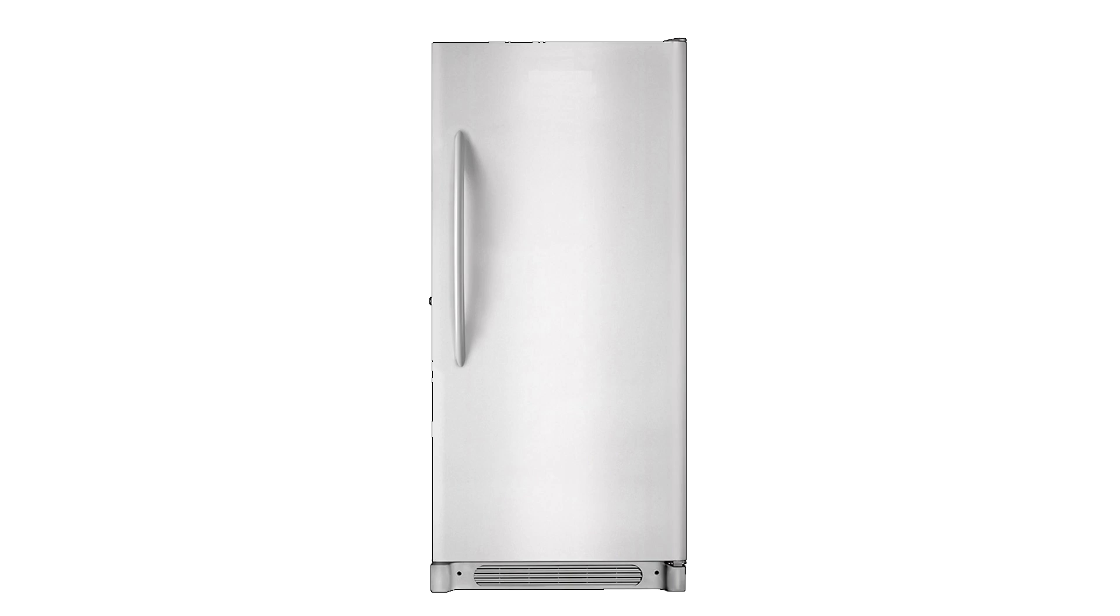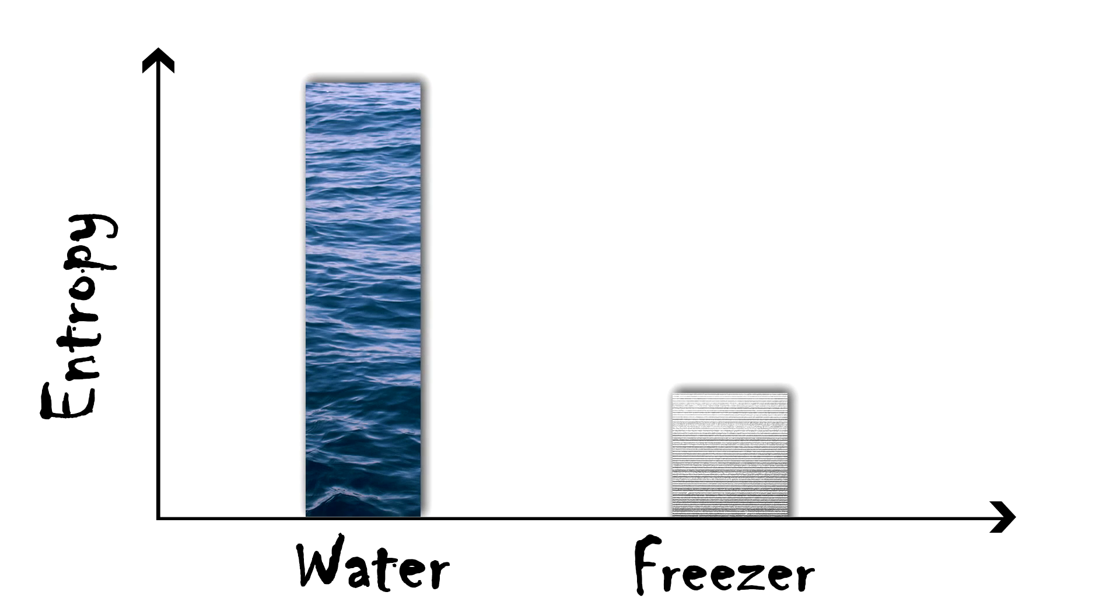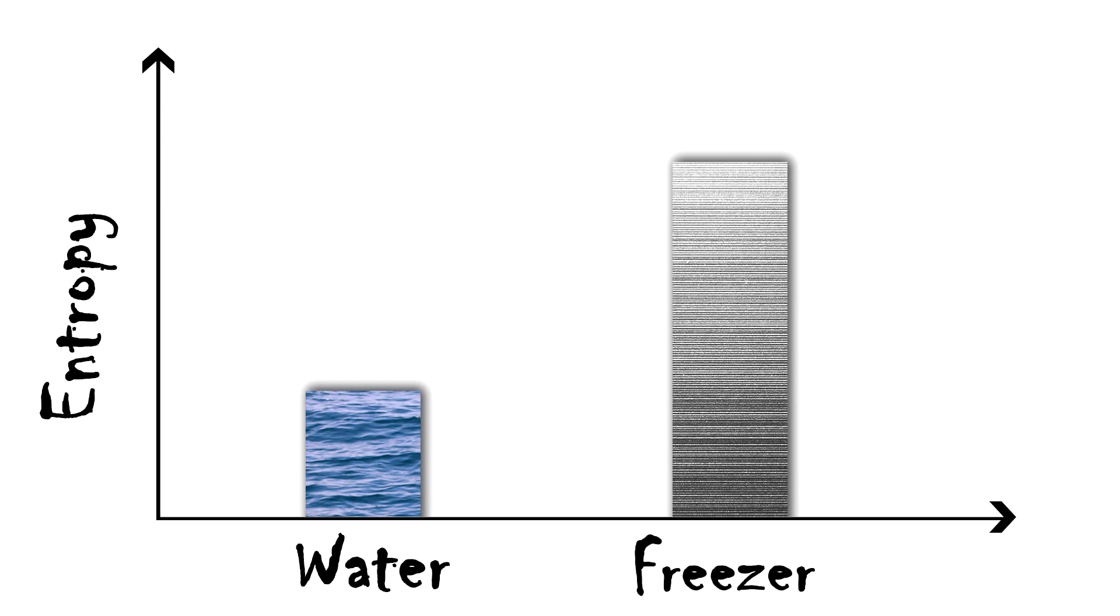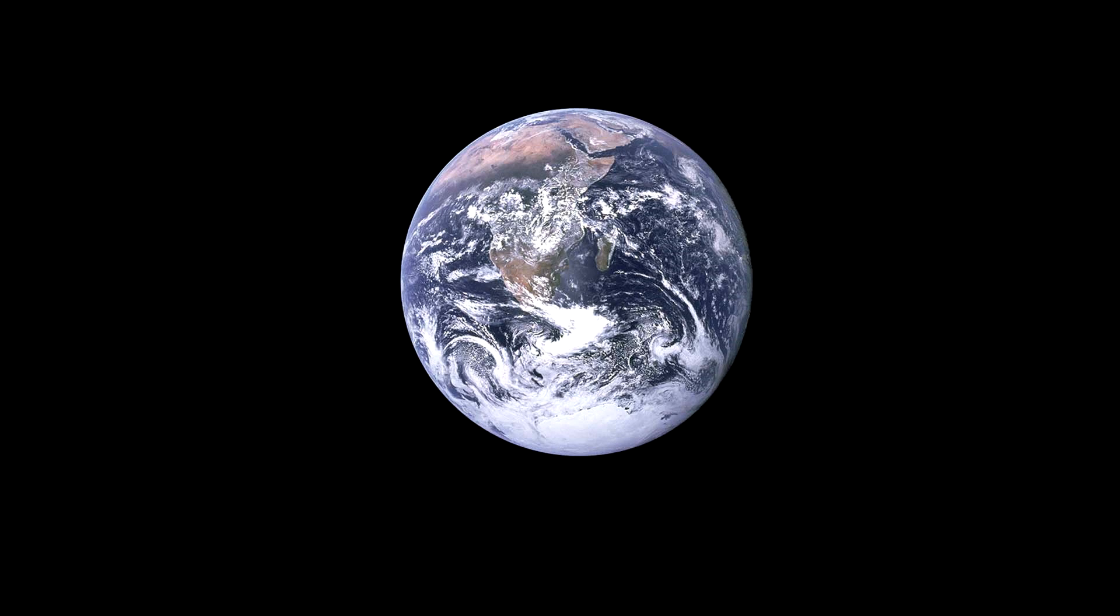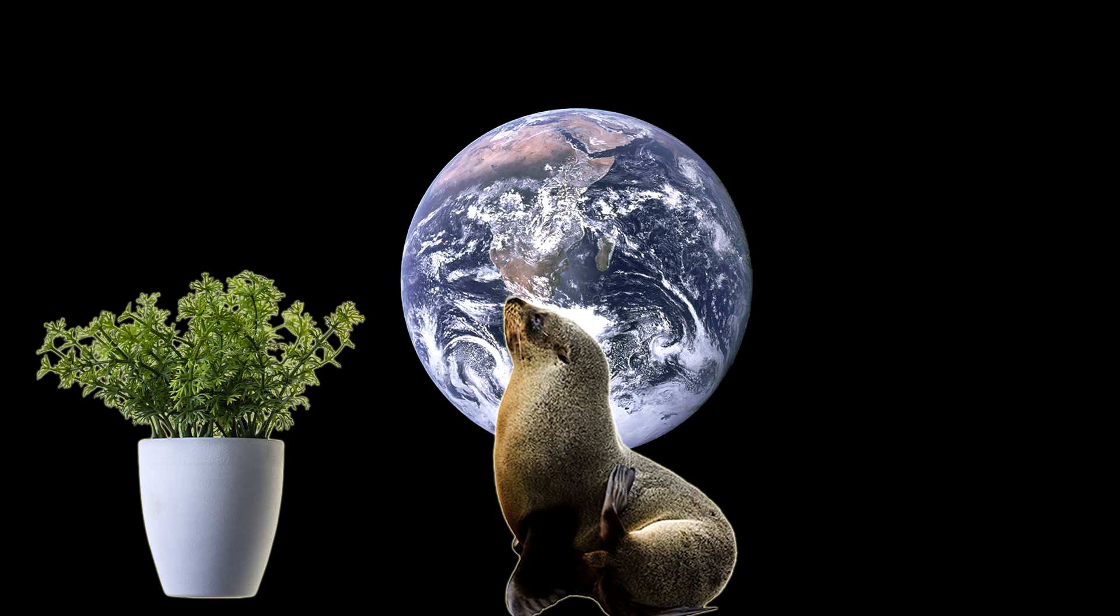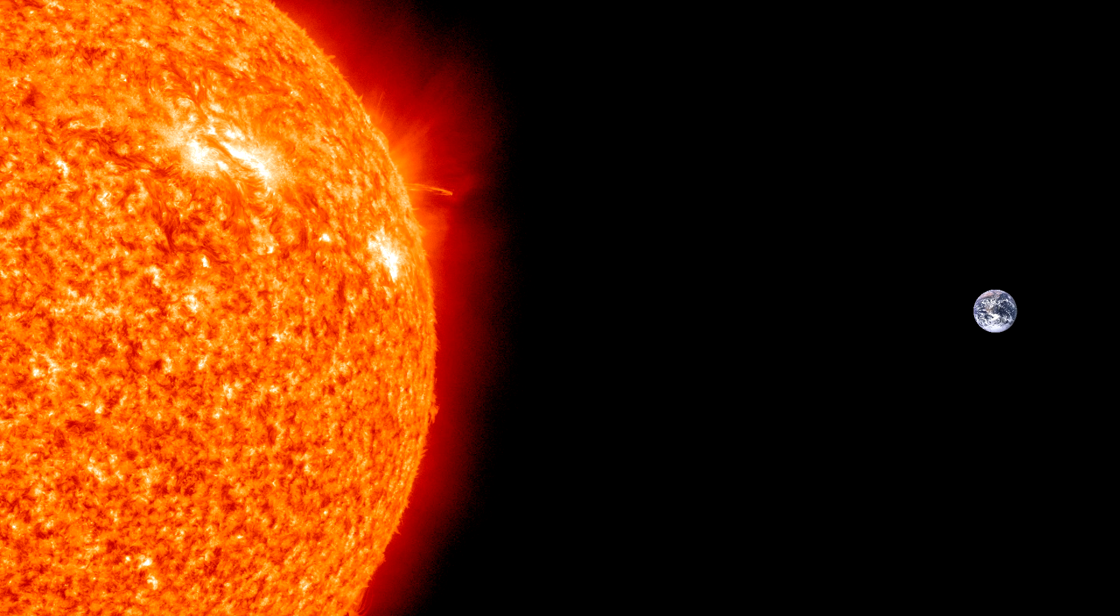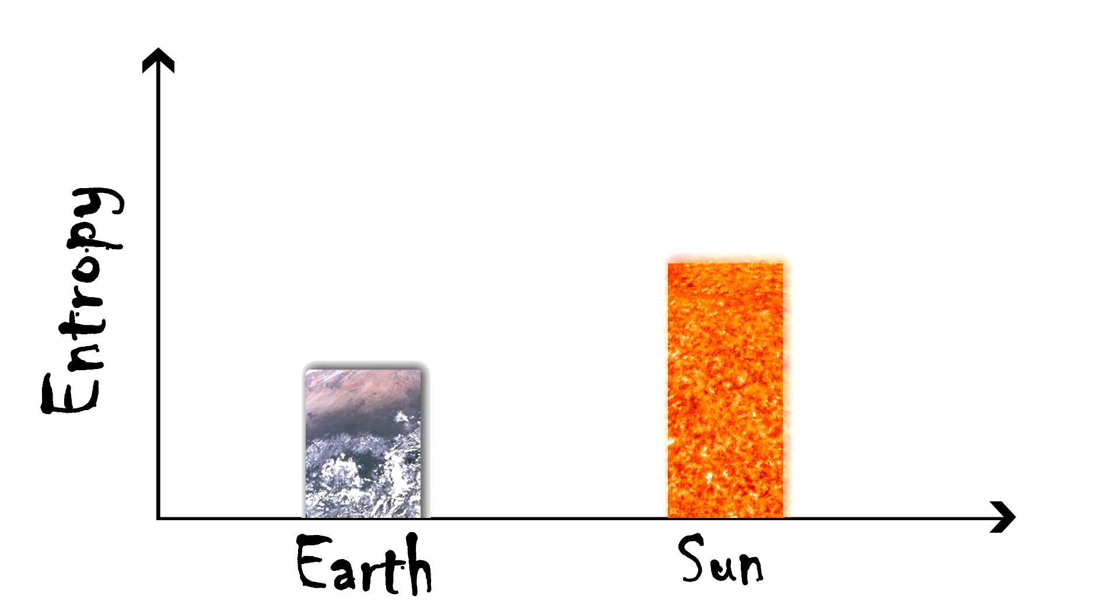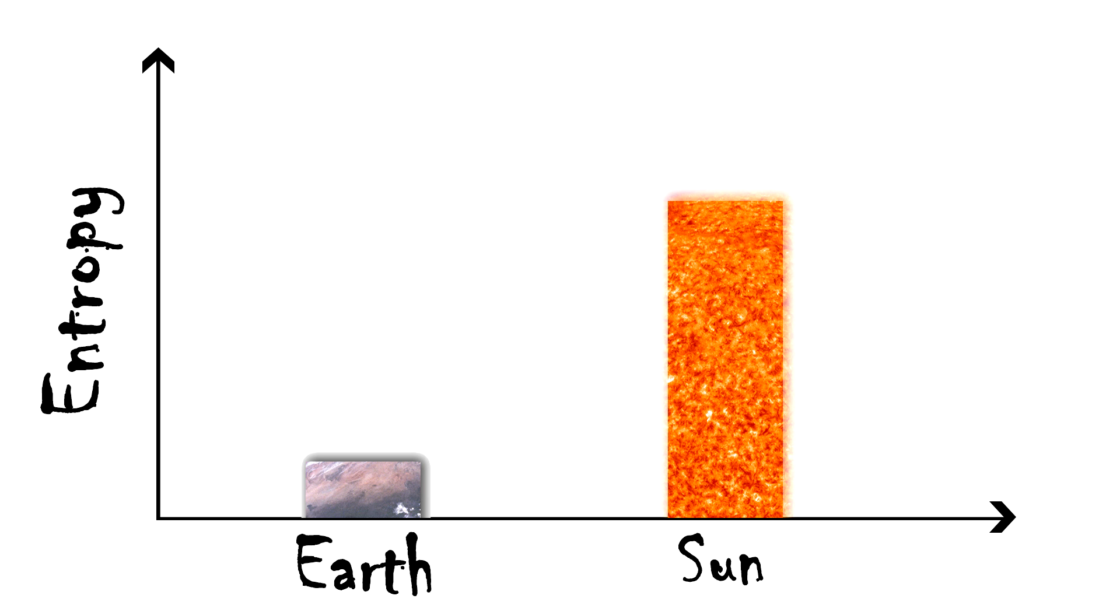If you want to freeze water, making it more organised, you'll need a freezer, and for that little bit of order, lots of disorder is produced, just by the freezer running in the first place. A lot of disorder for a little order. Likewise, if you want to make plants, and sea lions, and talking monkeys on Earth, you'll need millions of years of the sun slowly wearing itself out, again, increasing the overall entropy of the universe. A lot of disorder for a little order.